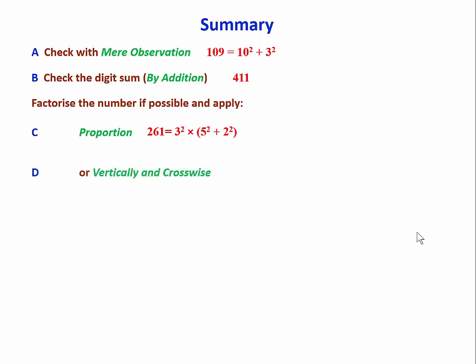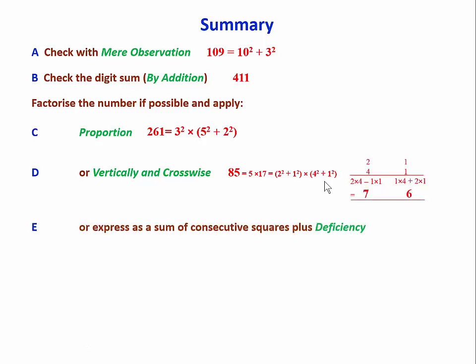The vertical and crosswise method, so for 85, we wrote it as a product, both of which numbers can be expressed as a sum of squares, and then we used vertical and crosswise to get the answer. And there's the general method, where we express as a sum of consecutive squares plus a deficiency, like this one, and get the answer.